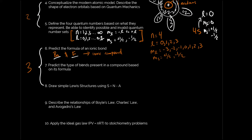Group 1 elements have a +1 charge, group 2 have a +2 charge. On the other side, non-metals want to gain electrons: group 7 gains one electron to reach noble gas configuration, giving a −1 charge; group 6 has a −2 charge. Barium is in group 2 so it's +2; fluorine is in group 7 so it's −1. To balance the charge you need two fluorines, so the formula is BaF₂.